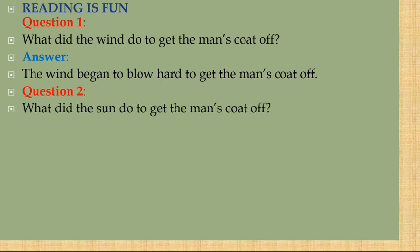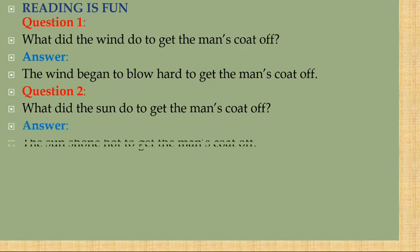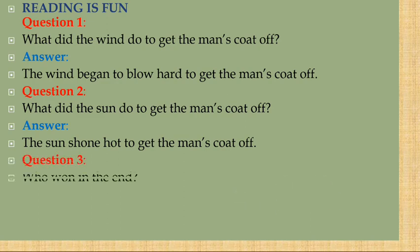Question 2: What did the sun do to get the man's coat off? Suraj ne vyakti ka coat utarne ke liye kya kiya? The answer is: the sun shone — shone means chamakna, shine se bana hai — to get the man's coat off. Admi ka coat utarne ke liye suraj ne teji se chamakna shuru kiya aur bahut garmi deni shuru ki.